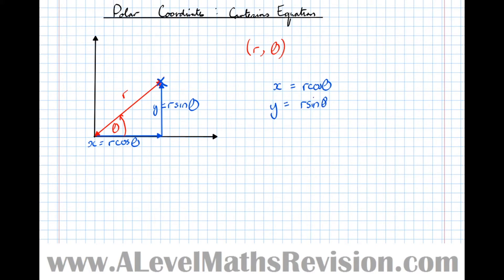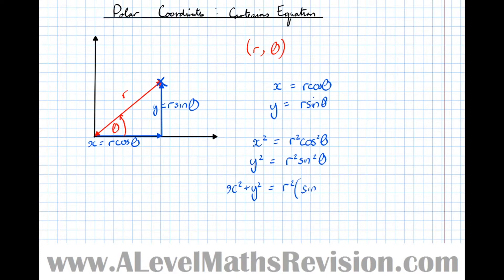Another useful fact to learn. If we square x and y, we get x-squared equals R-squared cos-squared theta, and y-squared equals R-squared sin-squared theta. Adding both sides together, we get x-squared plus y-squared equals R-squared times sin-squared theta plus cos-squared theta, which we know is equal to 1. Therefore, we can deduce that R equals the square root of x-squared plus y-squared, remembering that for the purposes of A-level, R can only be positive.